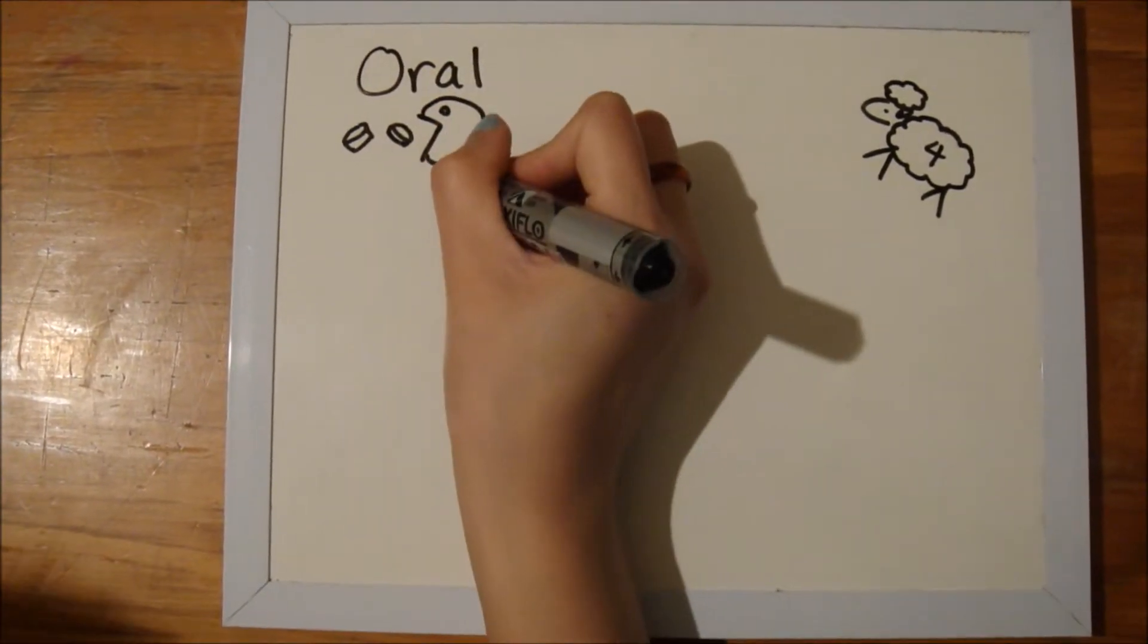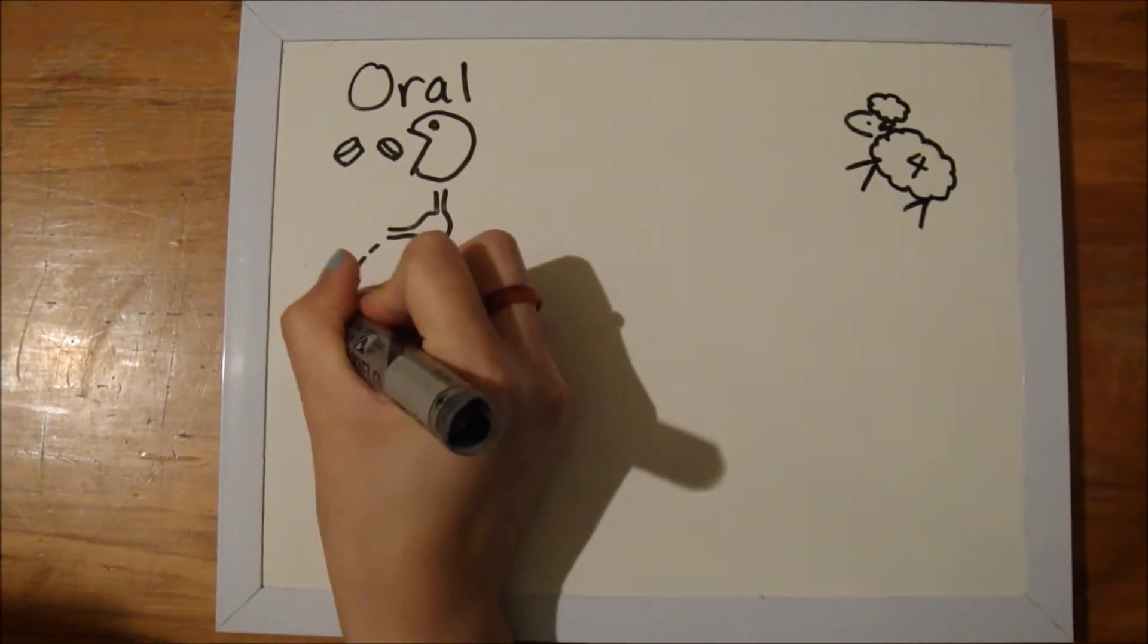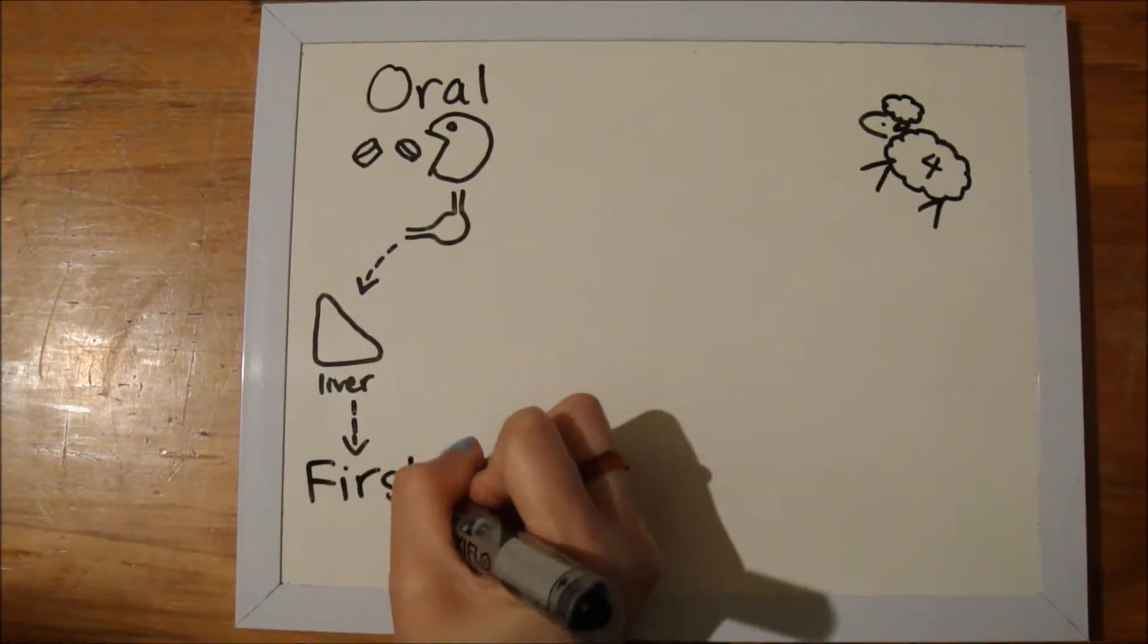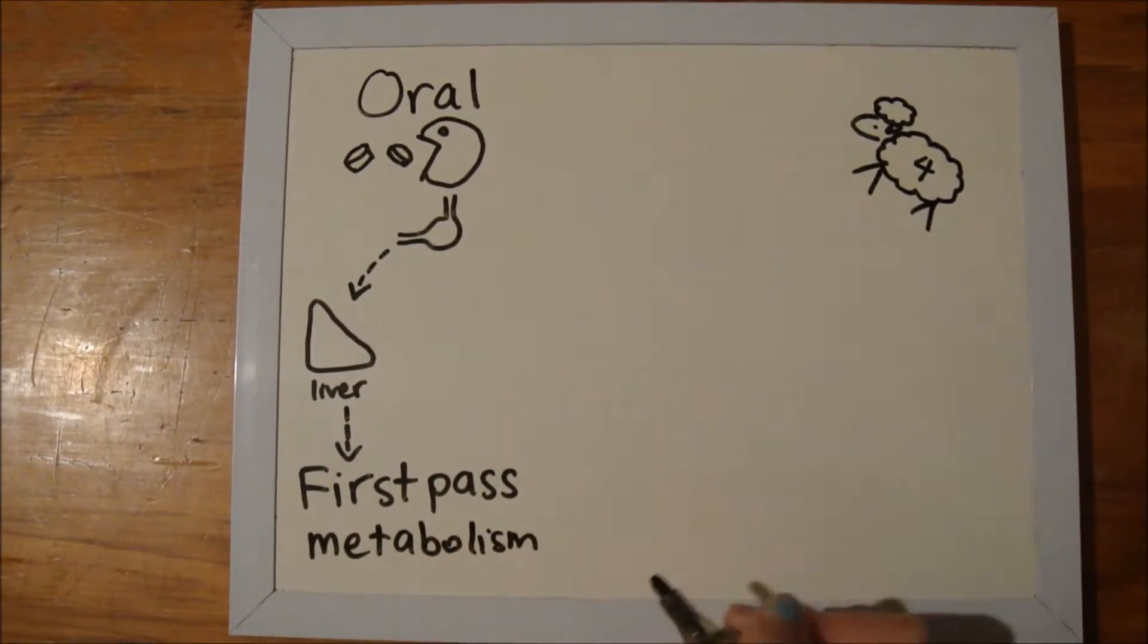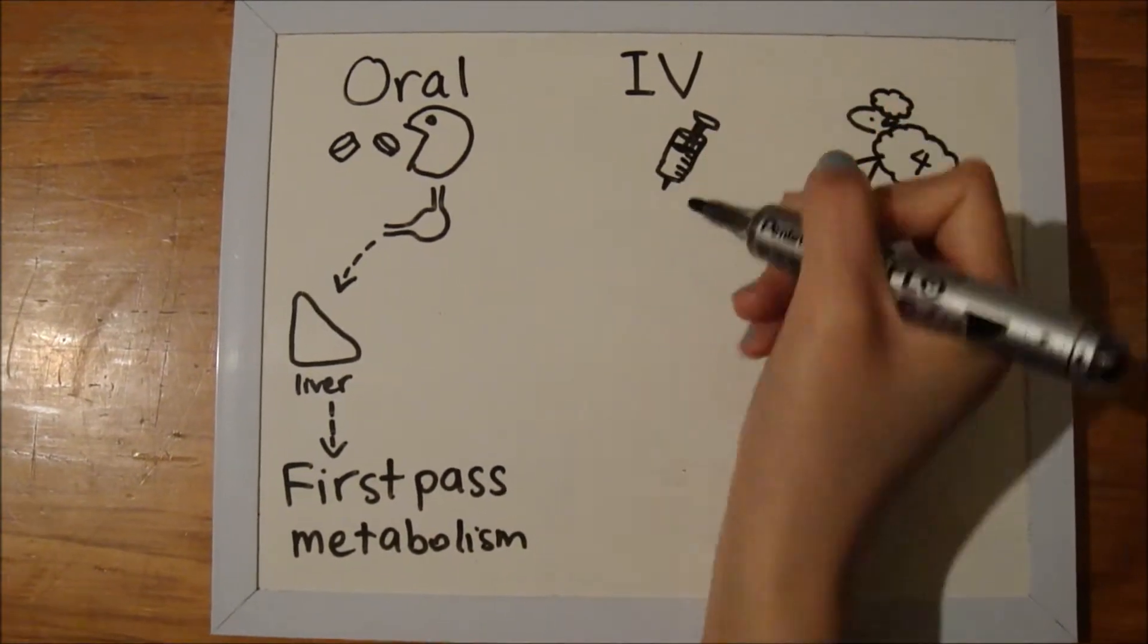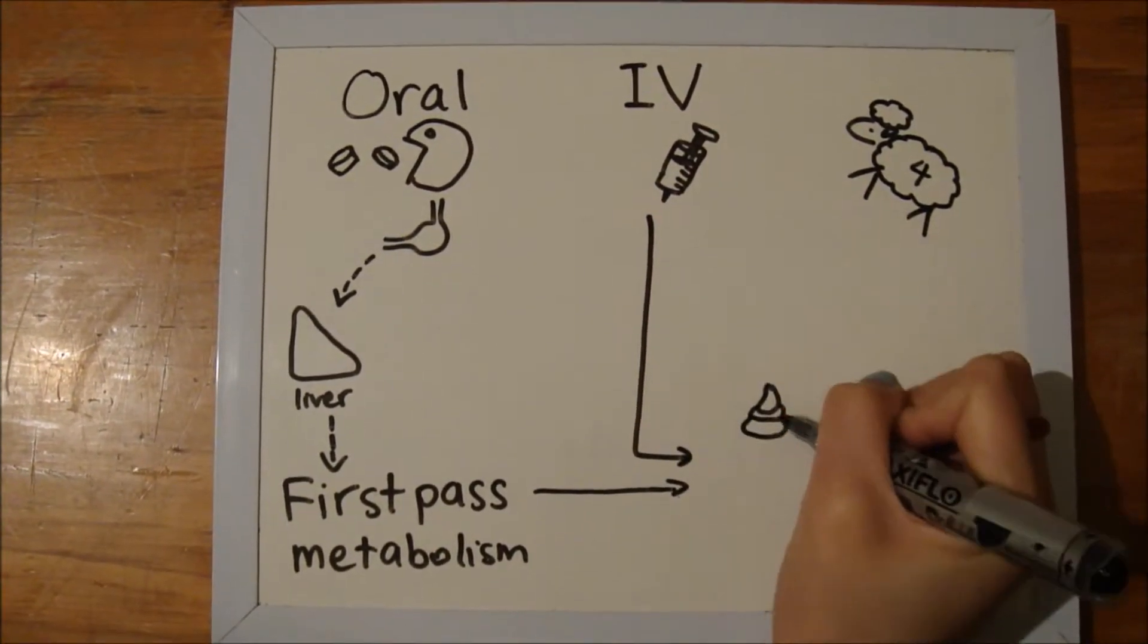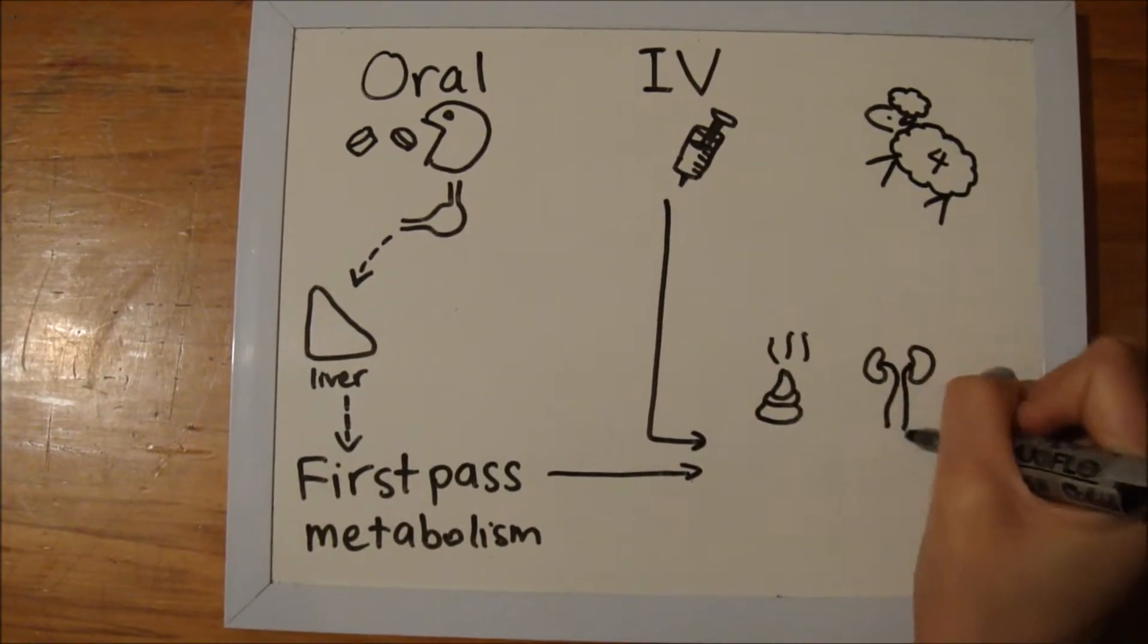Sildenafil citrate can be administered orally, where it passes through the gastrointestinal system to the liver and undergoes first-pass metabolism. It can also be administered intravenously directly to the circulation. Elimination occurs via the metabolites in the feces and urine.